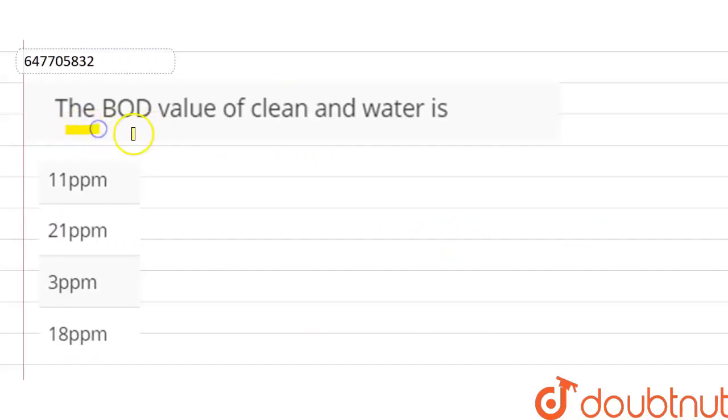Hello everyone, so the question is: the BOD value of clean water is. So we have some options - 11 ppm, 21 ppm, 3 ppm or 18 ppm. Okay, so let's see.